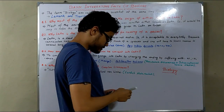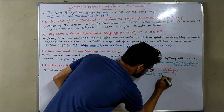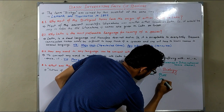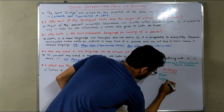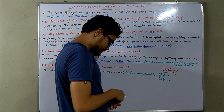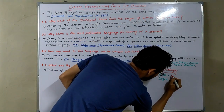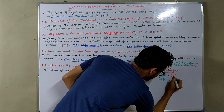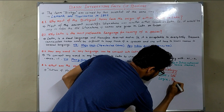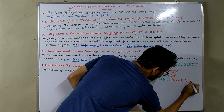The word biology originates from two Greek words: bios and logia. Bios means life and logia means branch to study.